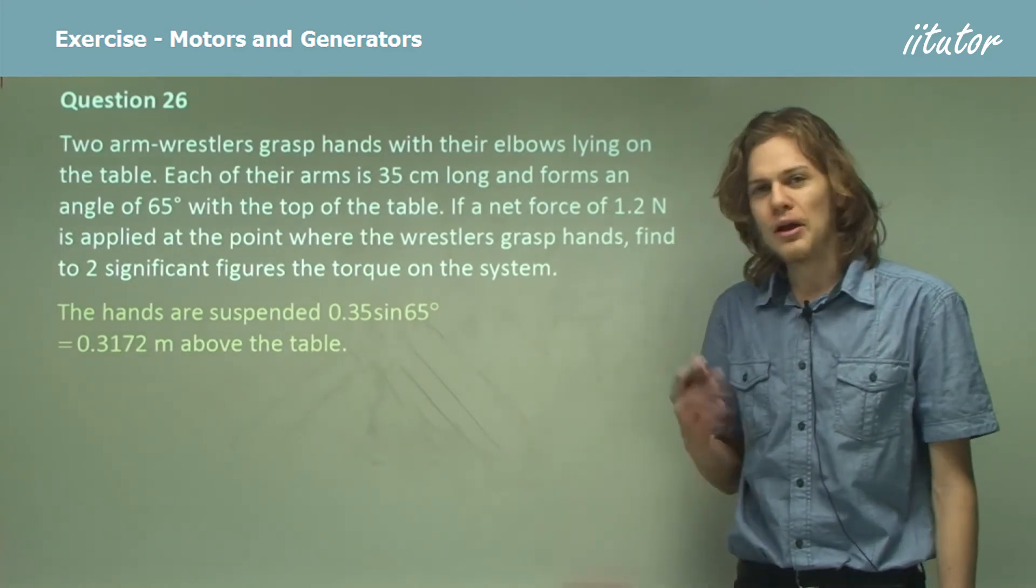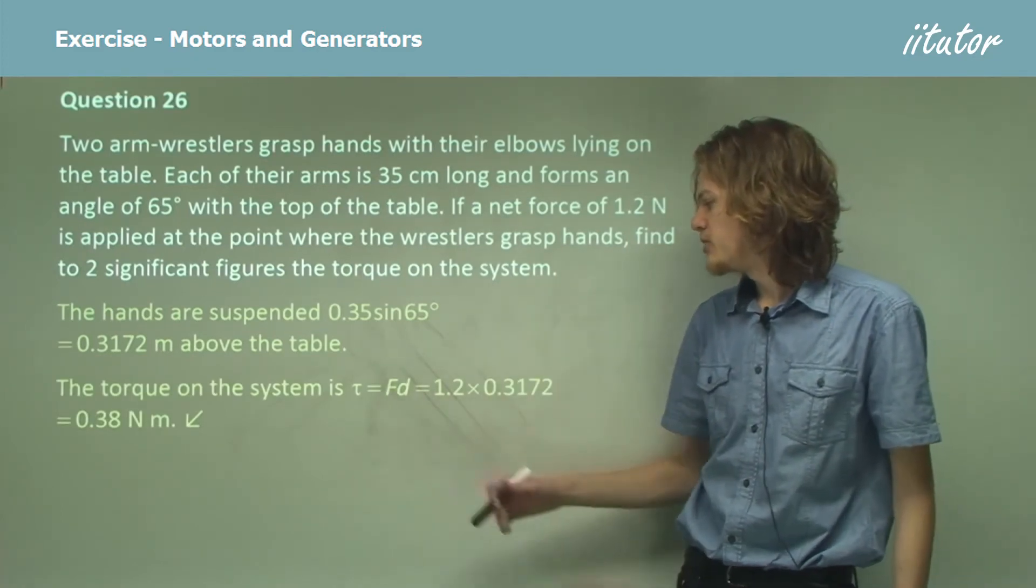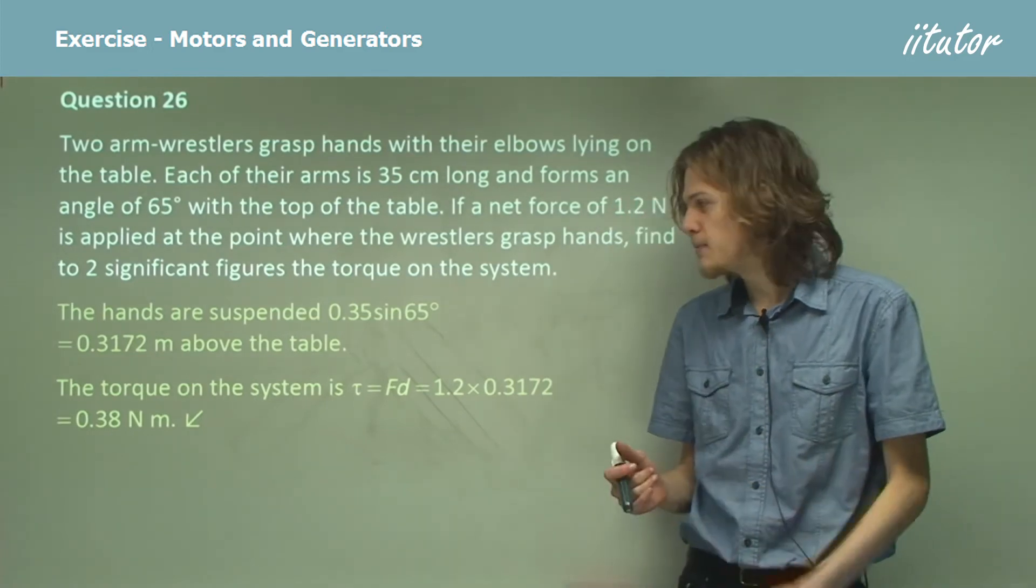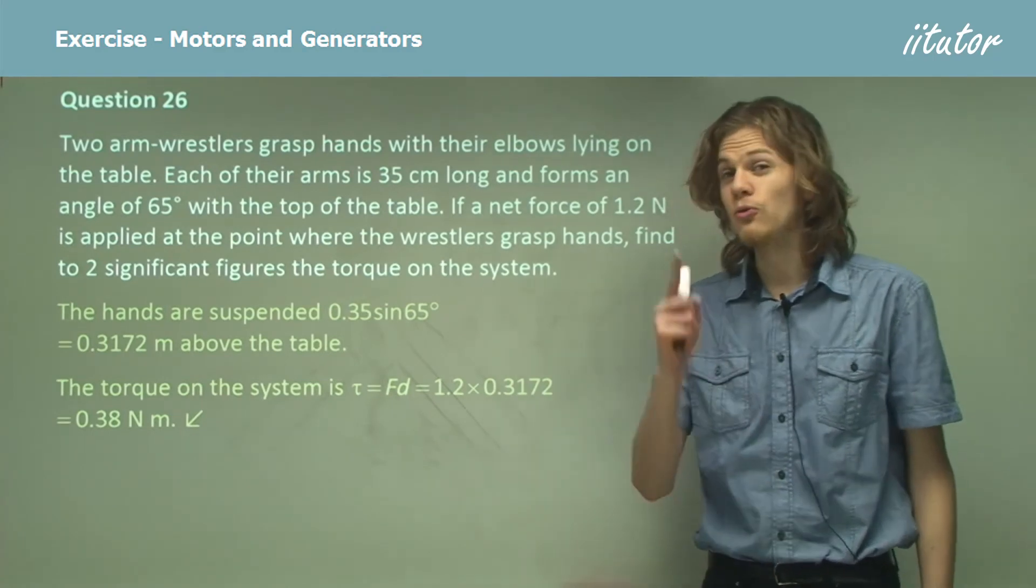Now we have that, it's fairly easy to find the torque. The torque on the system is just F times d, which is 1.2 times the distance from the force to the axis of rotation, and that gives us 0.38 Newton meters. Don't forget the units.